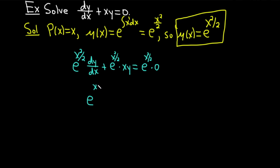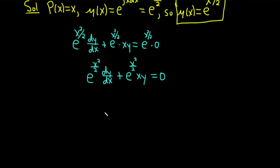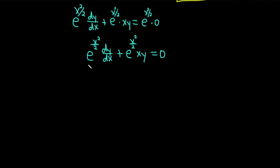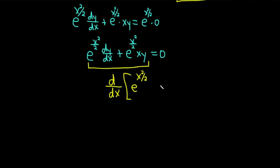So we have e to the x squared over two dy/dx plus e to the x squared over two times xy, and that's equal to zero. Here is the most important step in the entire problem. Something really amazing happens when we multiply by this integrating factor: this entire left hand side always becomes d/dx of your integrating factor — in our case e to the x squared over two — times y.